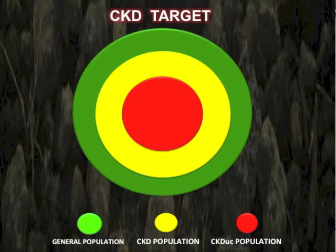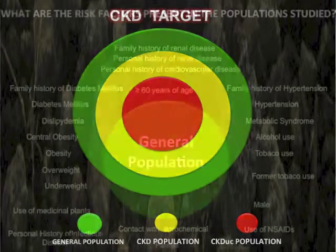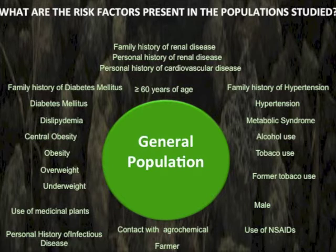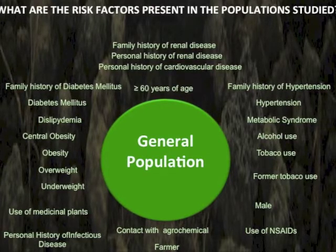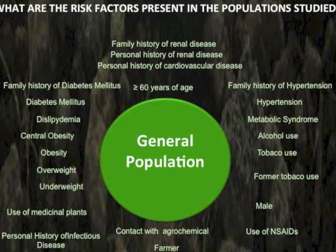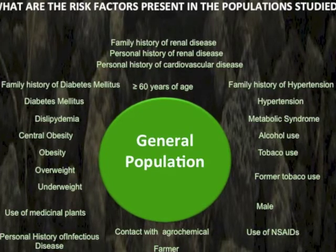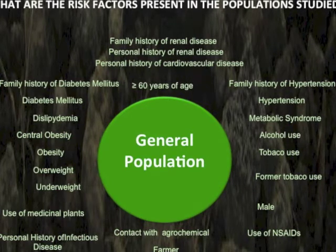Our CKD target is to study the general population, the population with CKD, and the population with CKD of unknown causes. Regarding prevalence of risk factors in the general population, we asked: what are the risk factors present in the study population? The population is under the influence of multiple risk factors for chronic kidney disease, where traditional and emerging risk factors are combined with occupational factors, contact with toxic chemicals, use of nephrotoxic drugs, and others.